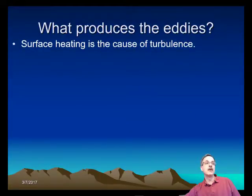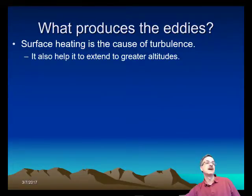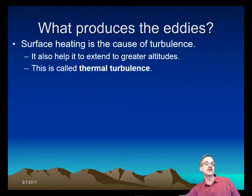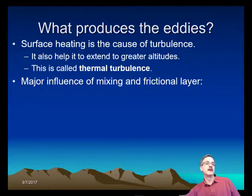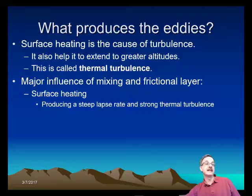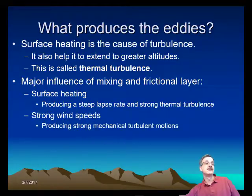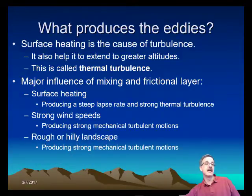What produces these eddies includes surface heating, which is one cause of turbulence and can help it extend to greater altitudes — this is called thermal turbulence. The major influences on mixing in the friction layer are: surface heating, which produces a steep lapse rate and strong thermal turbulence; strong wind speeds, which produce strong mechanical turbulent motions; and rough or hilly landscapes, which also produce strong mechanical turbulent motions.